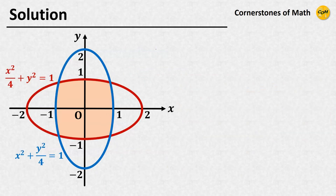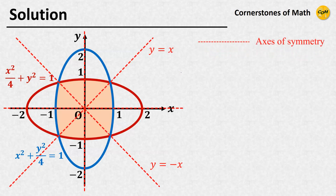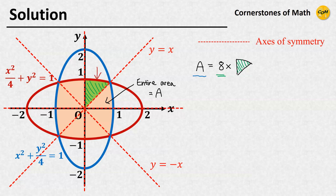In order to calculate the area of the shaded region, let us first think about the symmetry. You can easily notice that the setting of this problem contains many axes of symmetry. Due to these symmetries, we can say that the area A of the entire overlap is simply 8 times the area of this green shaded region — the region between the red ellipse and the line y equals x.